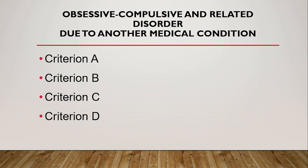It must be judged that symptoms are not better explained by another mental disorder. In Criterion C, the diagnosis is not made if the obsessive compulsive and related disorder occurs only during the course of delirium. The obsessive compulsive and related symptoms must cause clinically significant distress or impairment in social, occupational, or other important areas of functioning.